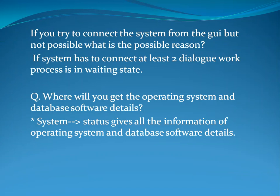If you try to connect to the system from the GUI but it is not possible, the likely reason is that at least two Dialogue Work Processes must be in a waiting state for the system to connect. To get operating system and database software details, in the GUI click System > Status, which gives all that information.